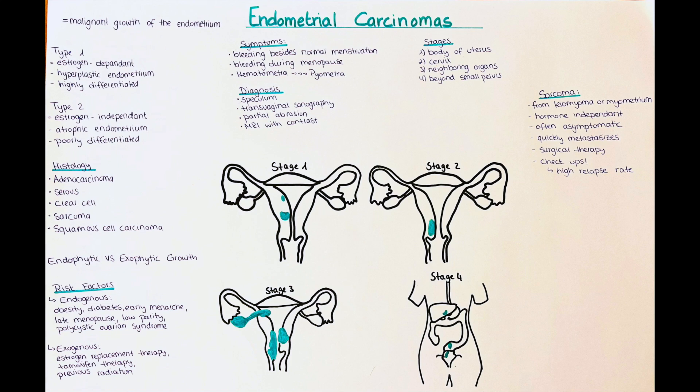Endometrial cancers are staged by the TNM classification. The stages depend on the depth of tissue the tumor involves. A stage 1 cancer is confined to the body of the uterus. A stage 2 cancer infiltrates the cervix of the uterus. A stage 3 cancer also infiltrates neighboring organs of the uterus. A stage 4 cancer extends beyond the small pelvis into different organs such as the urinary bladder or the intestines.